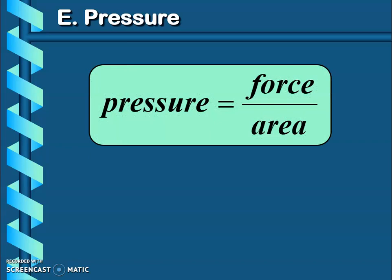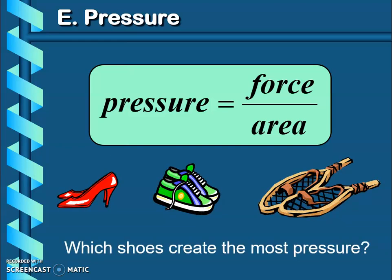All right, next let's talk about pressure. So pressure is force divided by area. Pressure can be exerted on an object or on gas, and it's force divided by area. If you take a look at these different shoes, which one do you think is going to create the most pressure, the most downward pressure? Go ahead and think to yourself of what shoe you think and why you think that.